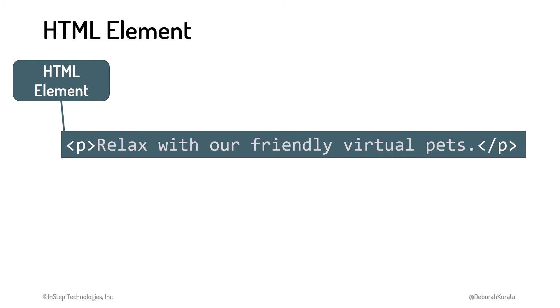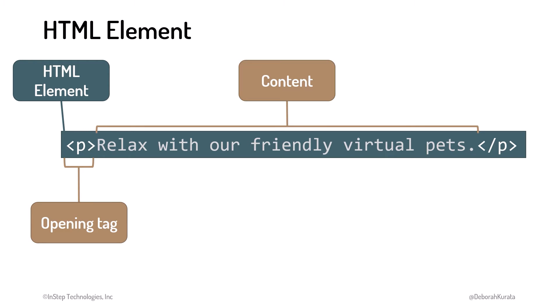Each HTML element follows the same basic syntax. An element starts with an opening tag, then the desired content, then ends with a closing tag. In this example, we use the p, or paragraph, element to enclose a paragraph of text. Each opening tag starts with a left angle bracket, then the name of the element — p in this example — and a right angle bracket. The opening tag defines where the element begins. Though not required, it's customary and best practice to type element names in lower case.